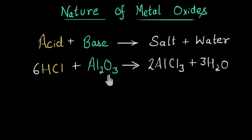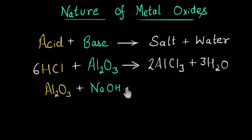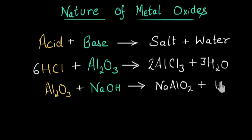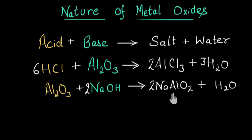Now let's look at an example where aluminum oxide acts as an acid. Here I have aluminum oxide, Al₂O₃, and this time I'm going to react it with a base — sodium hydroxide, NaOH. This gives a salt, NaAlO₂ (sodium aluminate), and water, H₂O. Balancing gives two sodium hydroxide with two sodium aluminate. So here aluminum oxide is reacting with a base to give salt and water. Since something that reacts with a base to give salt and water can only be an acid, aluminum oxide is acting as an acid in this example, whereas in the previous example it was acting as a base.